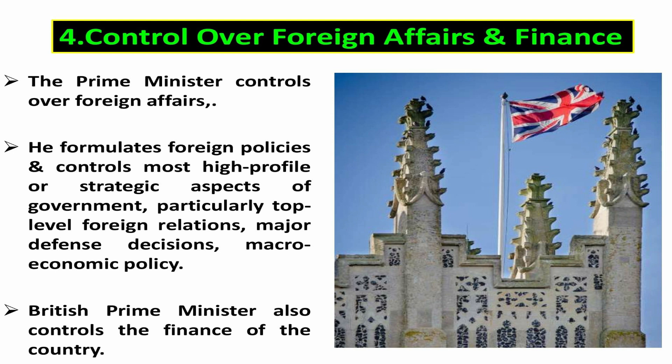Number four, control over foreign affairs and finance. The British Prime Minister controls foreign affairs, formulates foreign policies, and keeps an eagle eye on the most high-profile and strategic aspects of government — particularly top-level foreign relations, major defence decisions, macroeconomic policy, and the government's legislative timetable and priorities. Apart from this, the British Prime Minister also controls the finance of the country. The budget is prepared with his knowledge and he is kept informed about financial affairs.